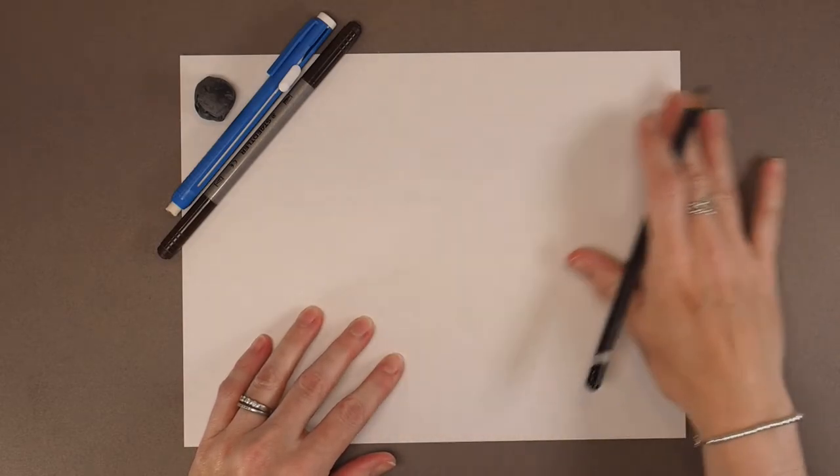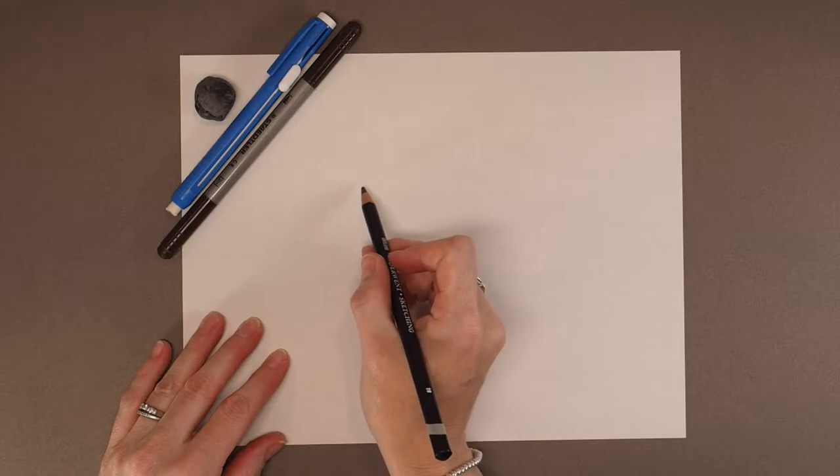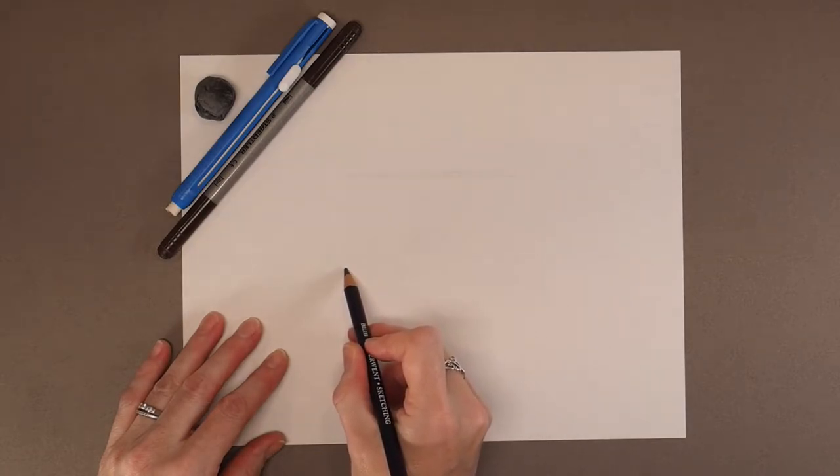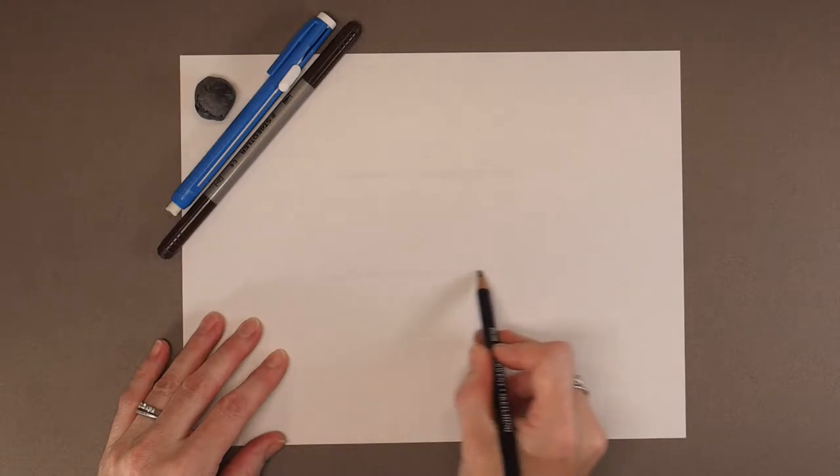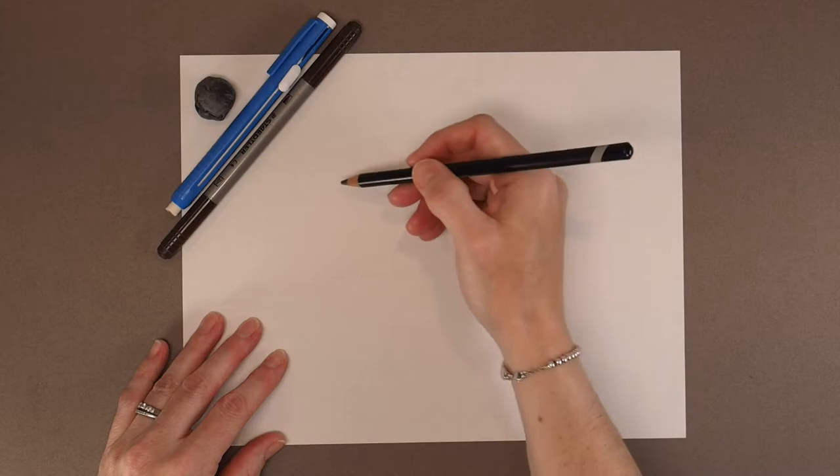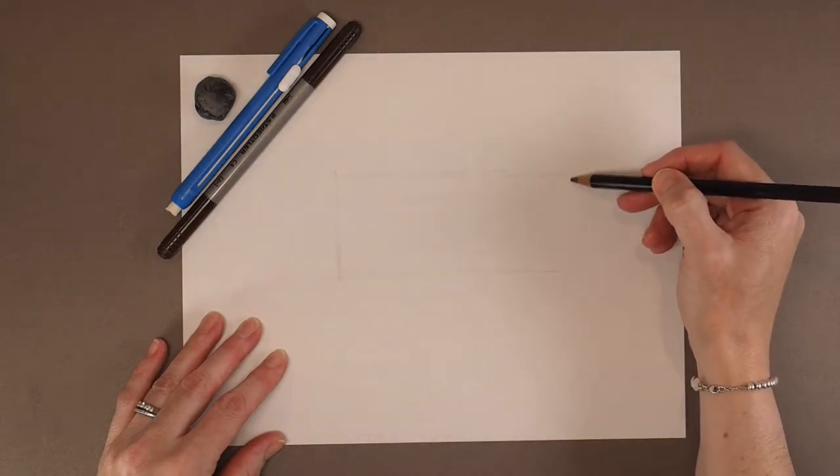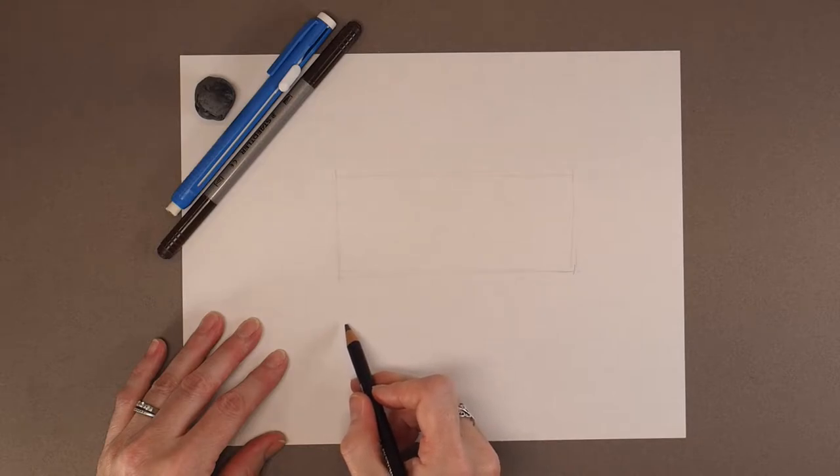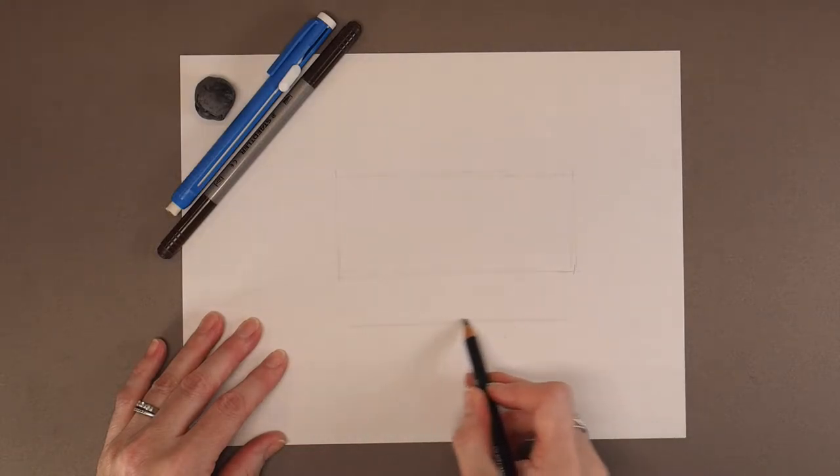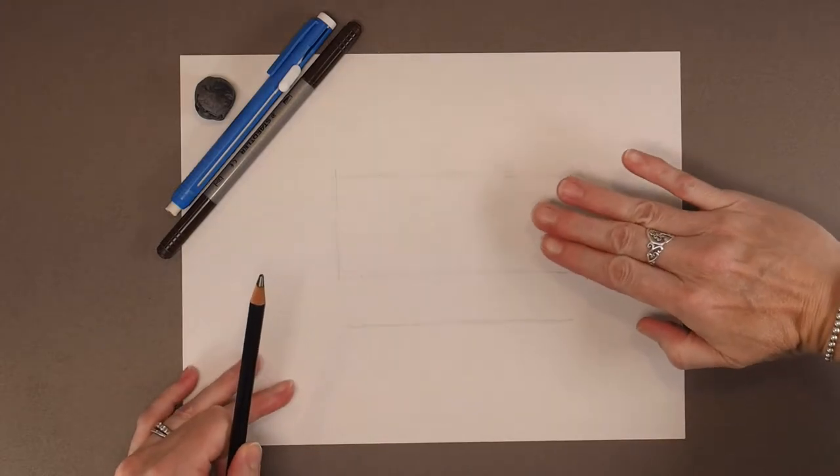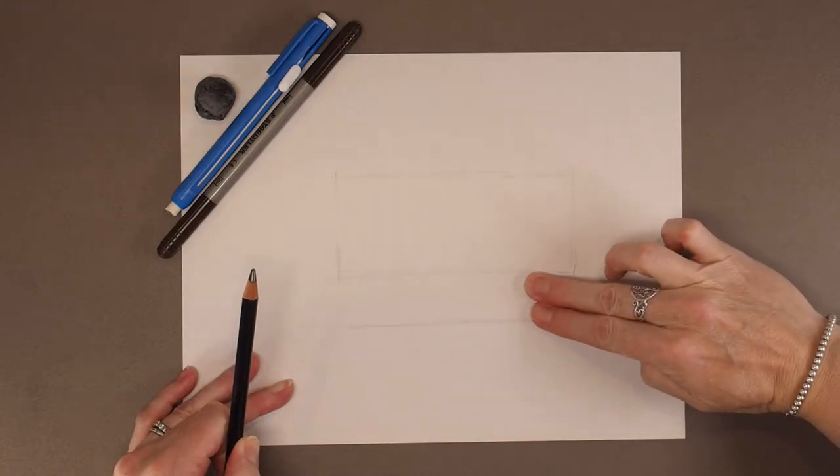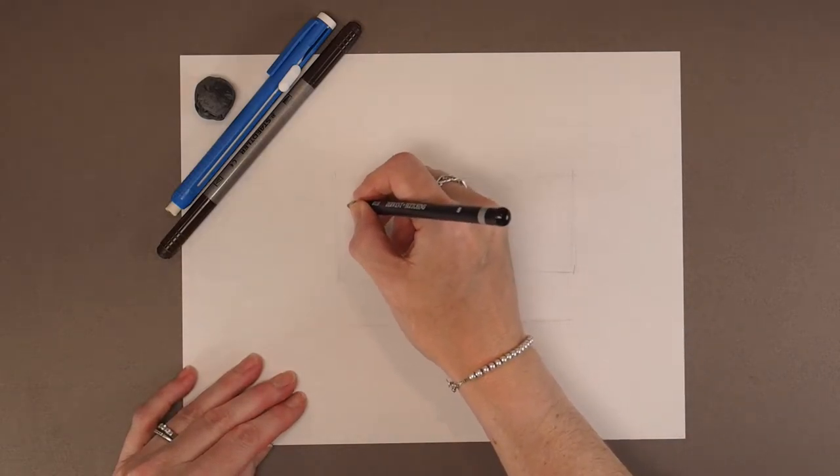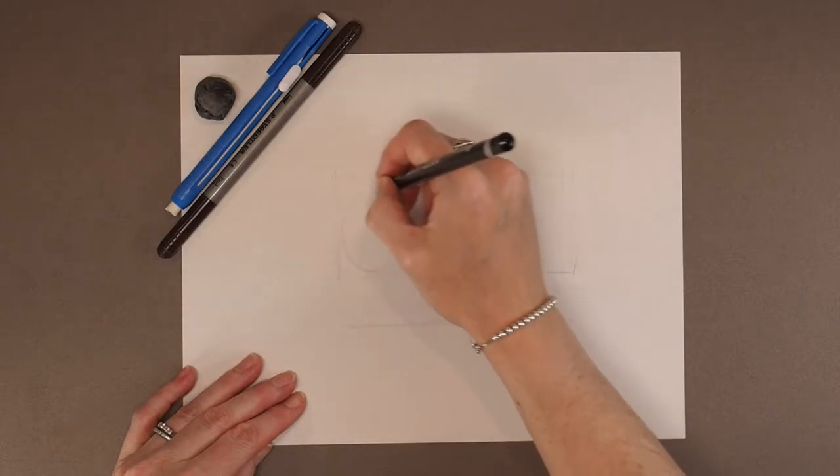So the first thing I'm going to do when I'm drawing my anteater is I'm going to make a rectangle. So I'm just going to do a straight line. Another straight line. I might actually bring it out a little further there. And then I'm going to close off my straight line there. Close off my rectangle there. And I'm going to do a line at the bottom for the ground.